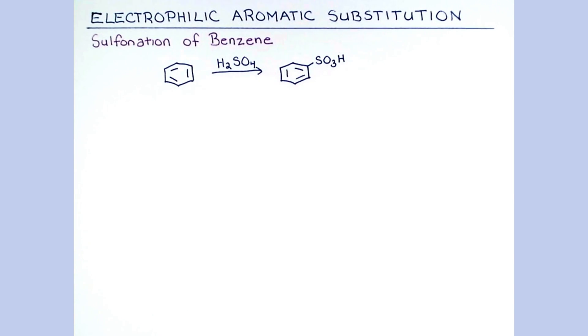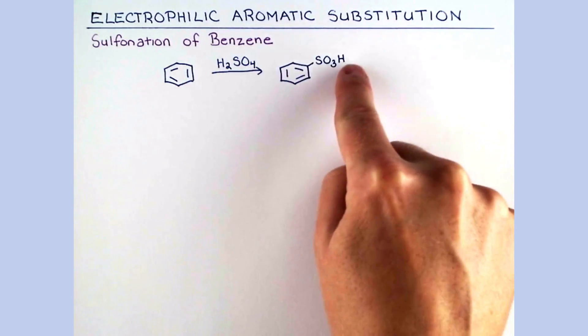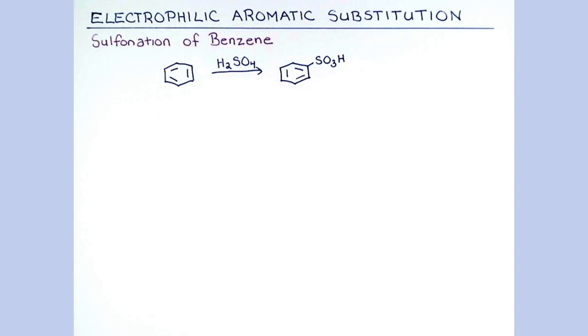We will first look at the sulfonation of benzene with sulfuric acid to produce our sulfonic acid. This will shed light on the subtleties of our second mechanism, where we use sulfur trioxide.